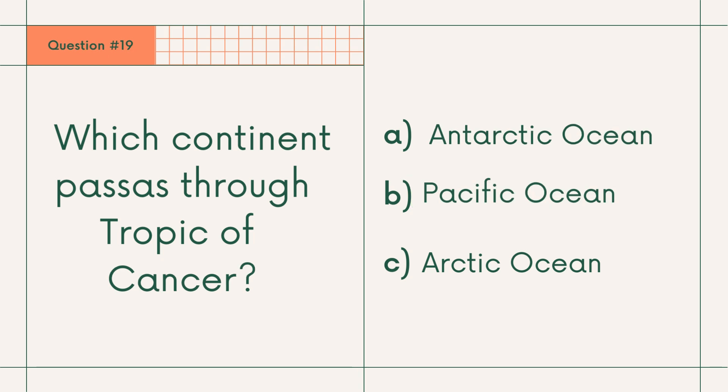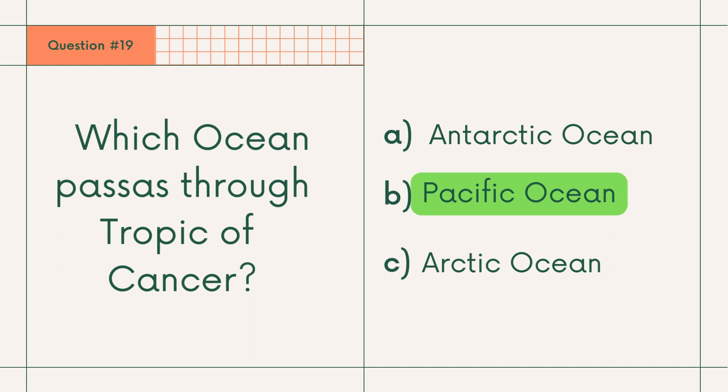Question 19: Which ocean does the Tropic of Cancer pass through? A. Antarctic Ocean, B. Pacific Ocean, or C. Arctic Ocean. Answer: B. Pacific Ocean.